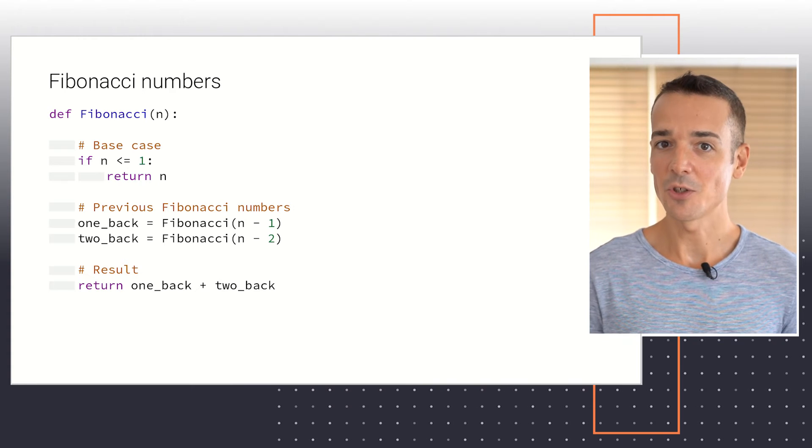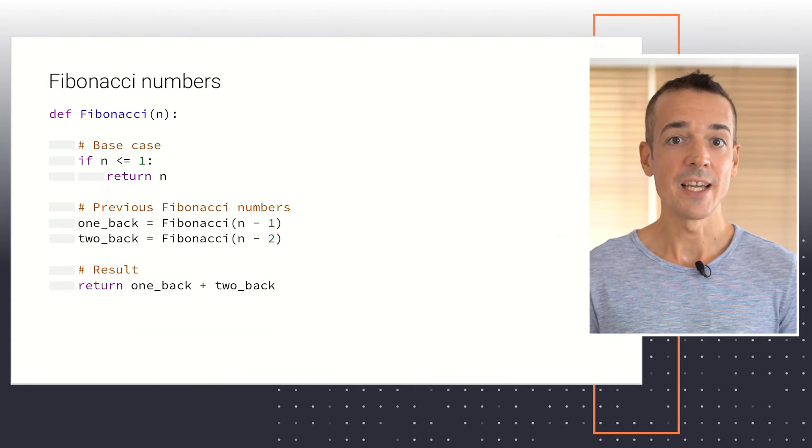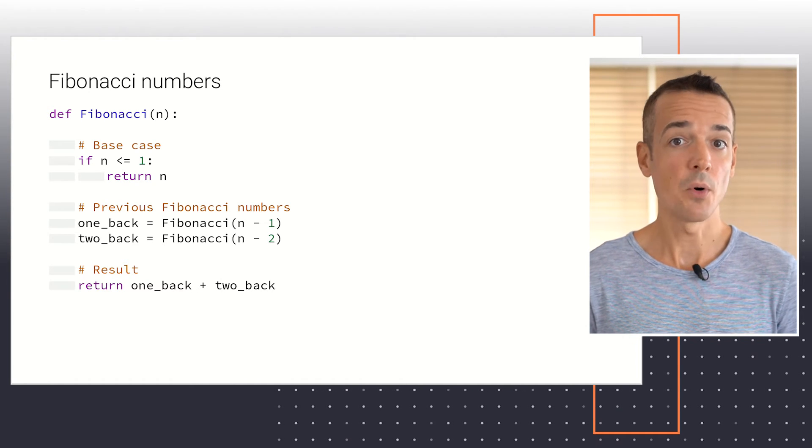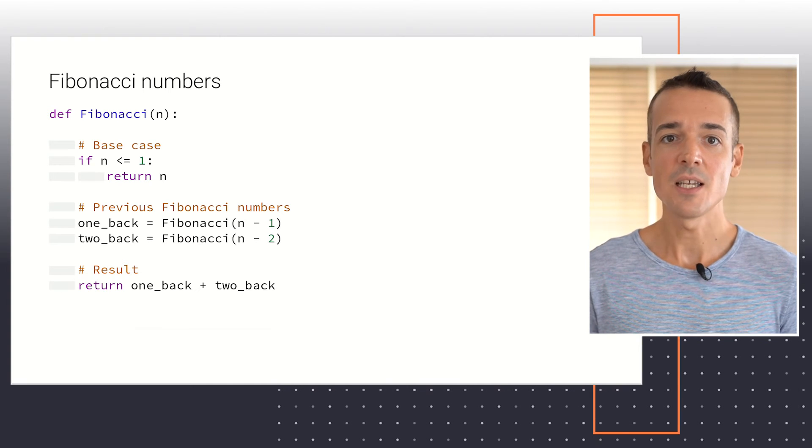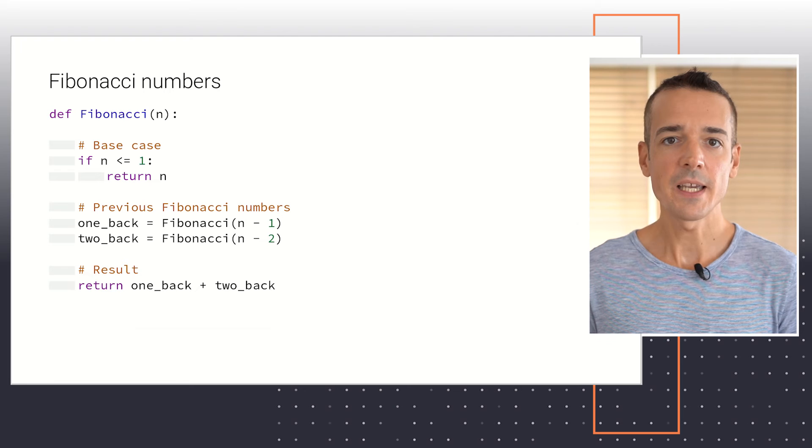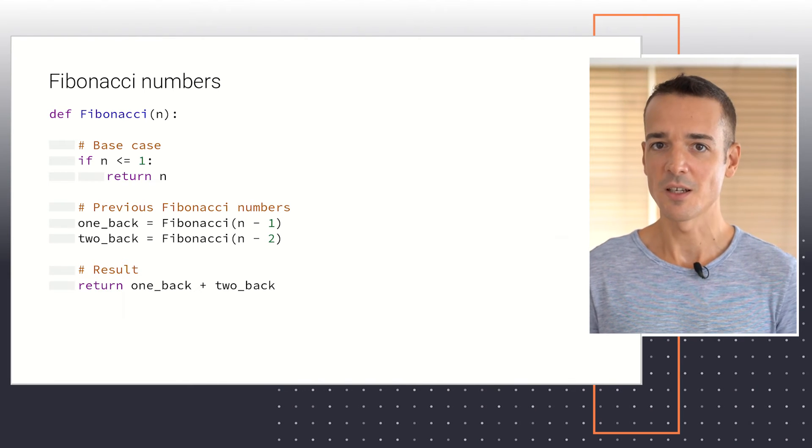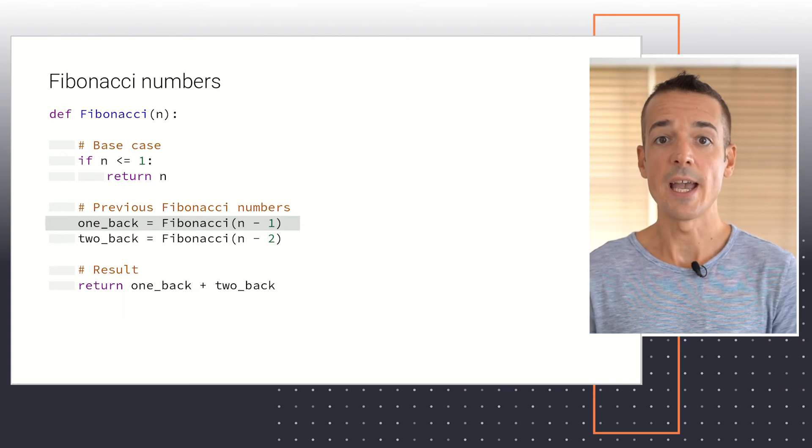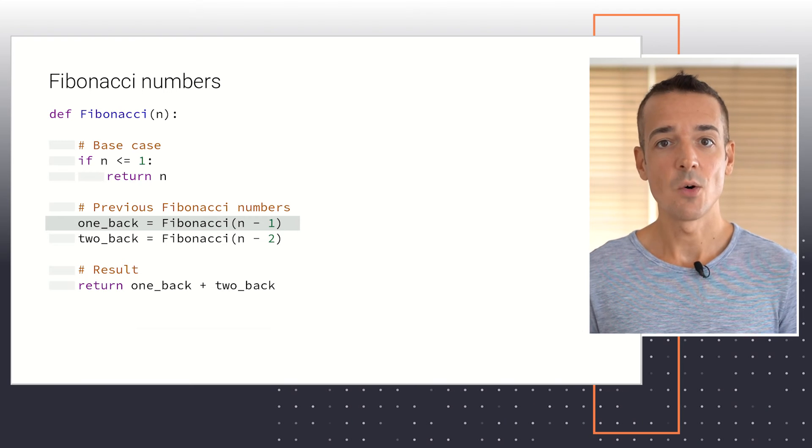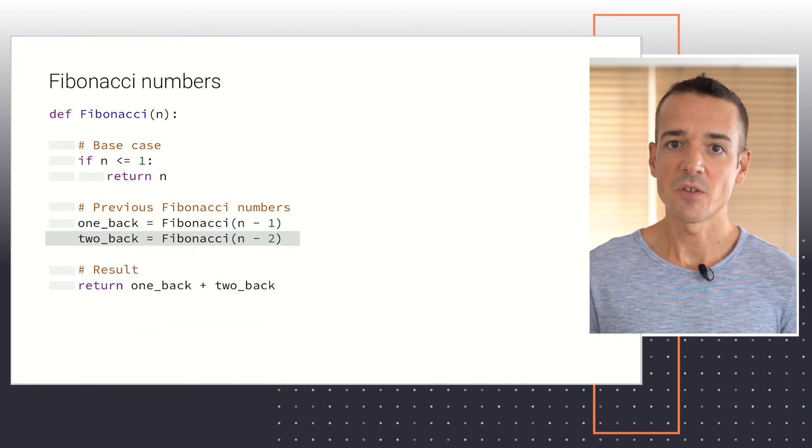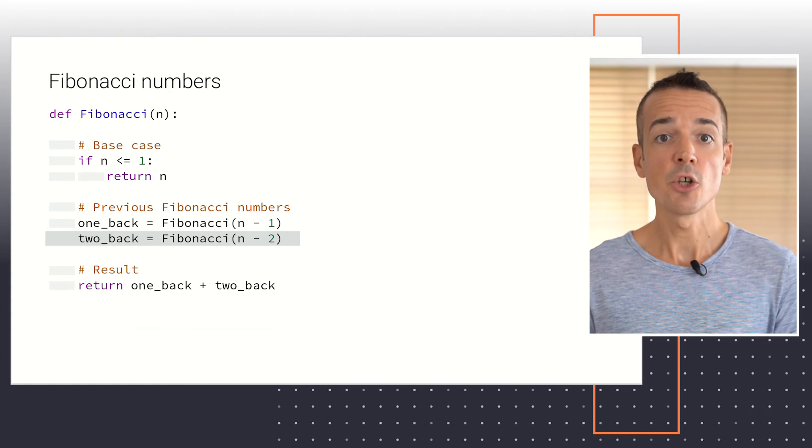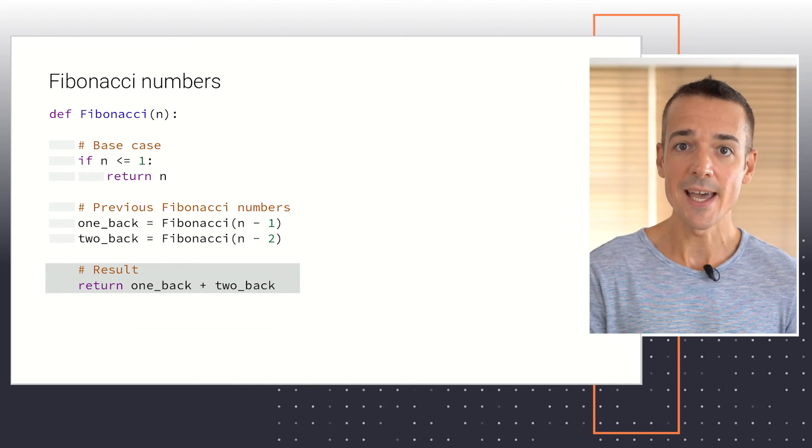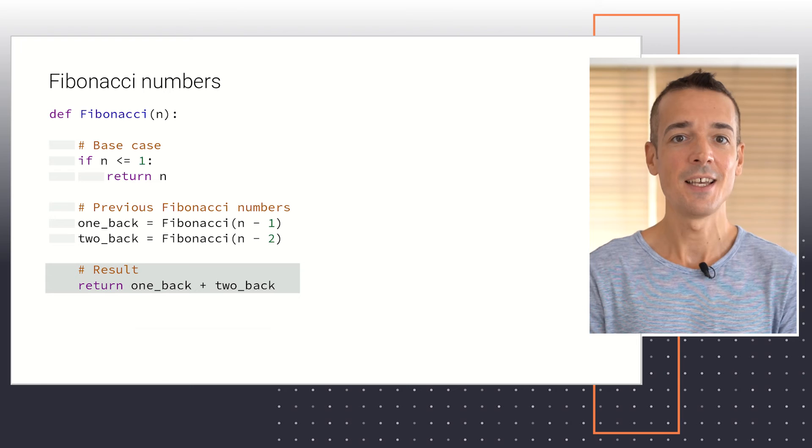If we still remain in the body of the function after this code, it means that the return statement above didn't execute, and therefore the condition in the if block was false. At this point, we're dealing with a general case in which n is greater than 1. Here we need to obtain the two previous Fibonacci numbers of the sequence, which will involve two recursive calls. The first call saves Fibonacci number n-1 in a variable called one_back, and the second saves Fibonacci number n-2 in another variable named two_back. In the final block of code, we return the result of the Fibonacci number n as the sum of variables one_back and two_back.